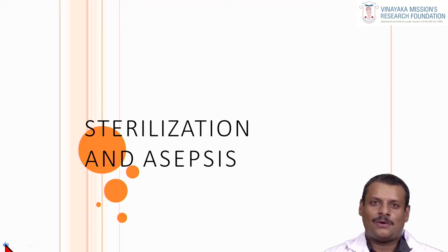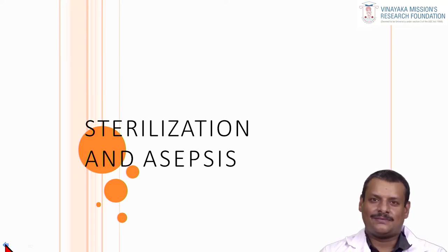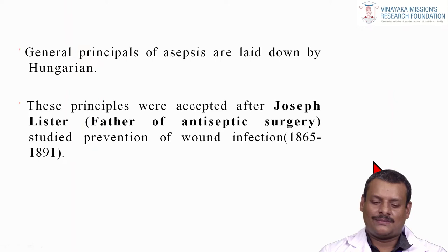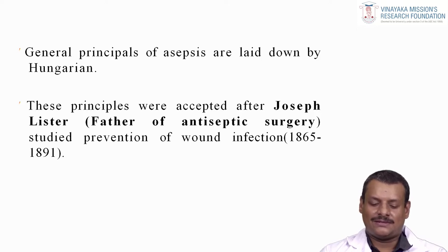The contents we are going to see include terminologies, what is sterilization and disinfection, the steps for sterilization stages, physical and chemical methods used in our field, and how the aseptic environment is maintained. Starting with the history, the general principles of asepsis were laid down by a Hungarian physician. These principles were widely accepted after Joseph Lister, the father of antiseptic surgery, who studied prevention of wound infection.